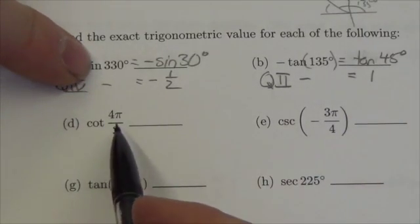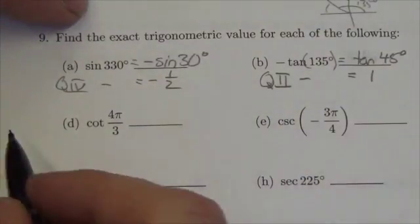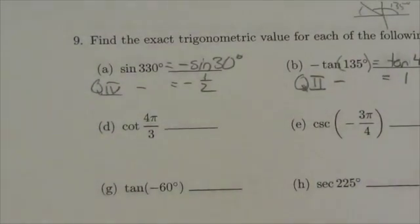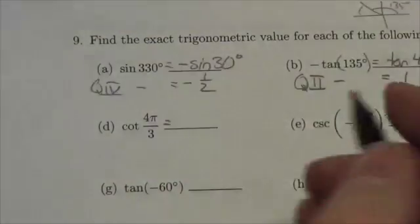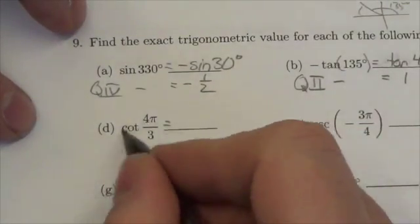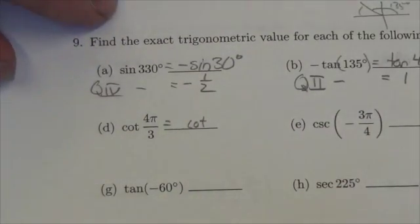When we've got 4π over 3, notice that this ratio here is slightly larger than 1. Now, let me do it like this here. I know, before I even adjust the sign here, whether this is positive or negative, I know what the reference angle is. The reference angle is very easy to catch here.